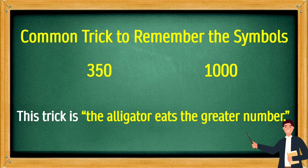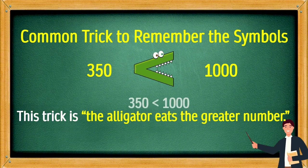Another example: 350 and 1,000. The alligator will eat 1,000 because 350 is less than 1,000.